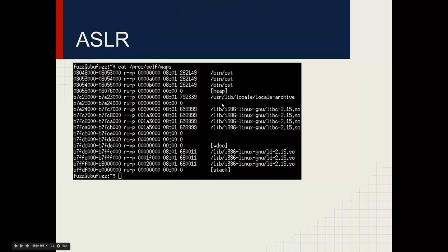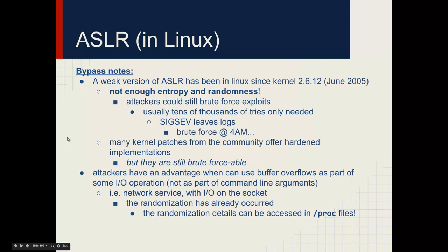To verify ASLR is running on a given process, check /proc/[PID]/maps across multiple executions — you should see the addresses differ per execution for every segment: heap, stack, VDSO, etc. However, 32-bit ASLR does not have enough entropy and is rather easy to brute force. If you're trying to brute force a running service protected by ASLR, you'd likely see that activity happen in the middle of the night when no one's watching, because it could take some time.